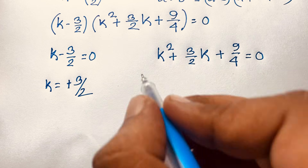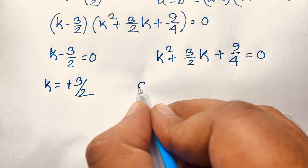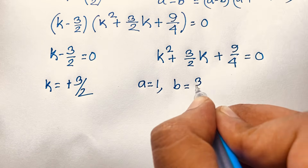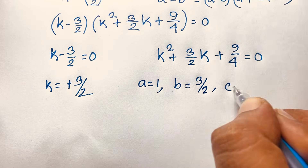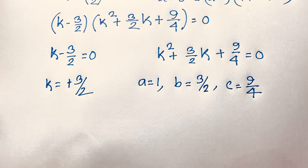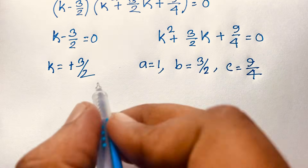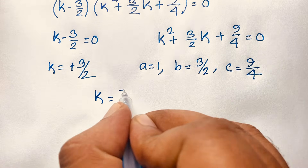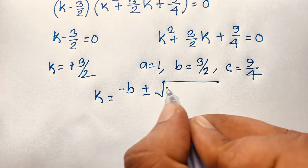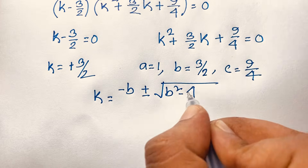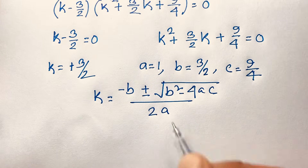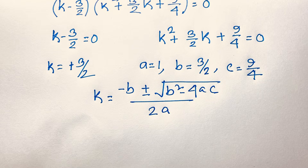Case 2: k² + (3/2)k + 9/4 = 0. Here a = 1, b = 3/2, and c = 9/4. We apply the quadratic formula: k = (−b ± √(b² − 4ac)) / (2a).